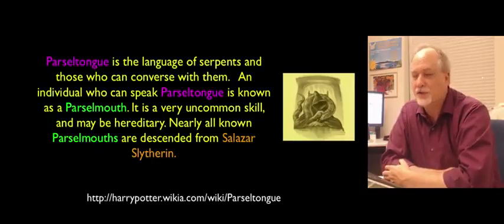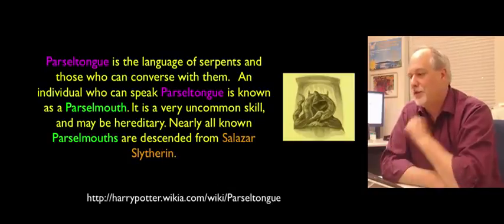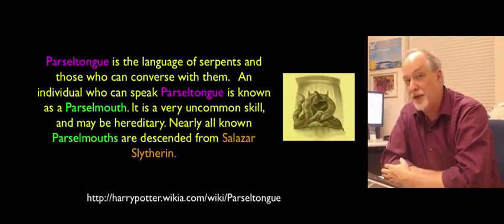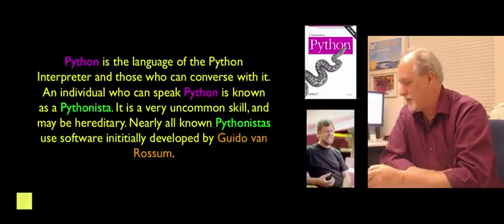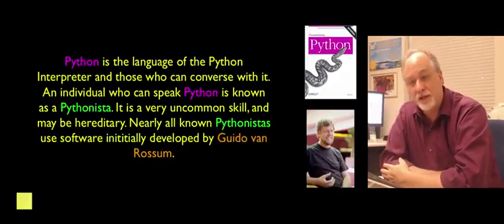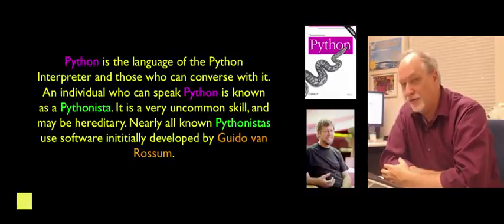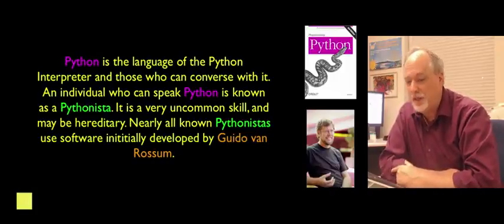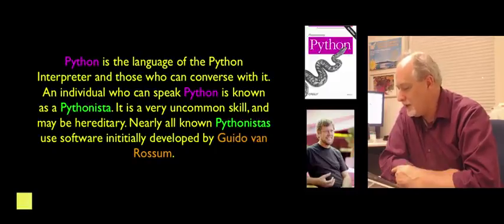Now I'll start with a little Harry Potter reference. Parseltongue is the language of serpents and those who converse with them. An individual who can speak Parseltongue is known as a Parselmouth, and it's a very uncommon skill and maybe even hereditary. Nearly all known Parselmouths are descended from Salazar Slytherin. There's our Harry Potter reference.